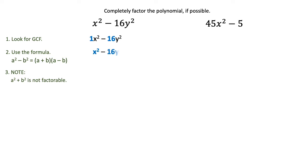So we can take a look at the terms, the x squared term and the 16y squared term, and we can apply the formula for difference of squares. Basically you are finding the square root of both of these terms and then you're going to write that in the a plus b, a minus b format.